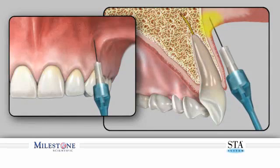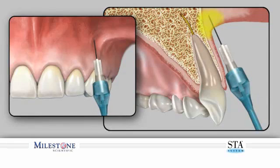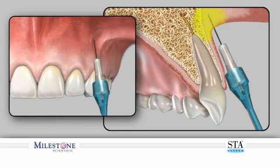If an aspiration test is required for the specific infiltration, perform an aspiration by depressing and releasing the foot control pedal. If the aspiration is negative, you can continue the infiltration injection and administration of anesthetic solution to the area. If aspiration is positive, reposition the needle and perform another aspiration by depressing and releasing the foot control pedal.